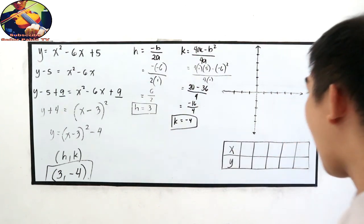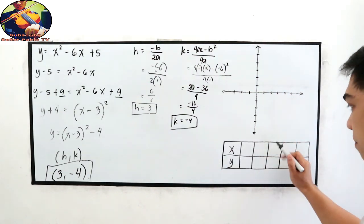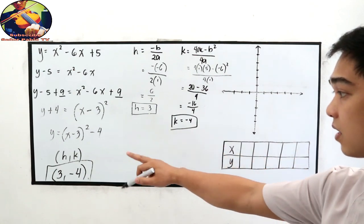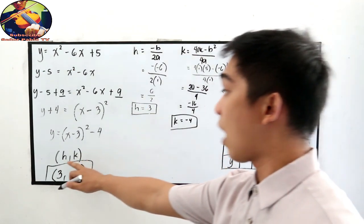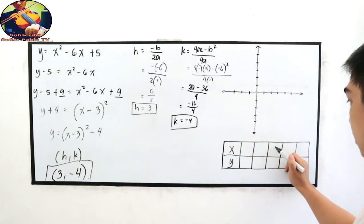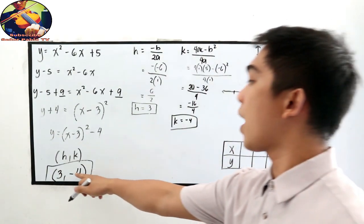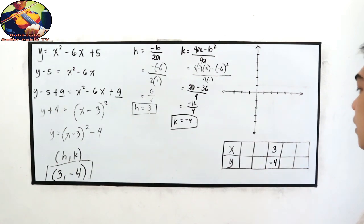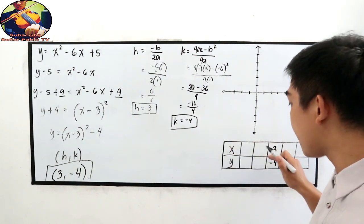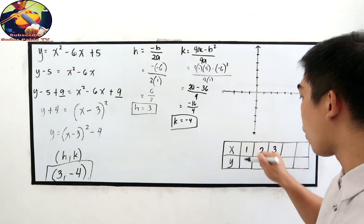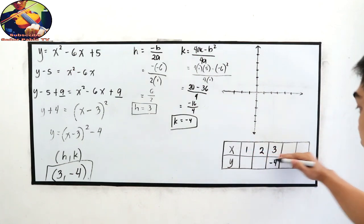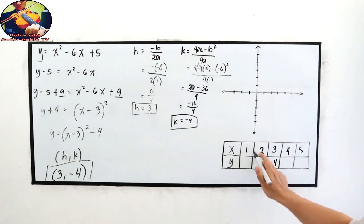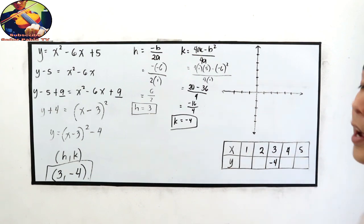Since we now have the turning point (3, negative 4), that goes in the middle of our table of values. x equals 3 with y equals negative 4. On the left side of 3 we have x values 2 and 1, and on the right side we have 4 and 5. So our x values are 1, 2, 3, 4, and 5.